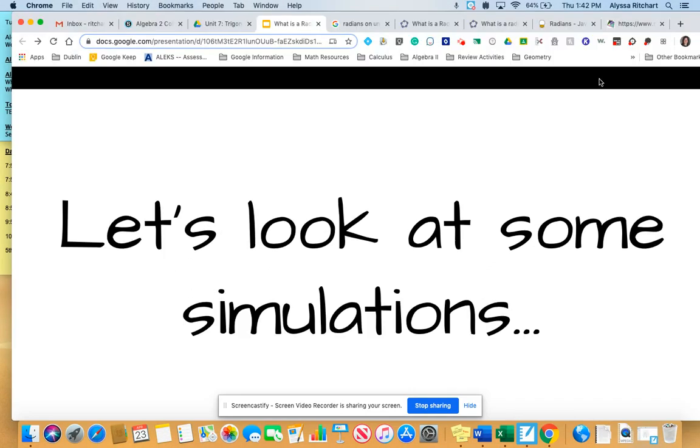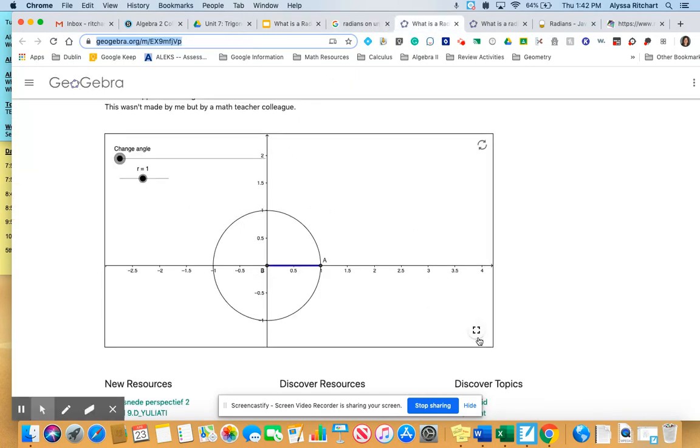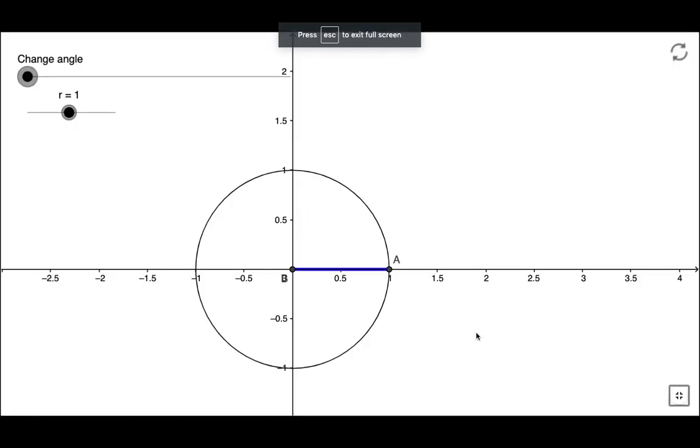First, we're going to take a look at some simulations. We have a circle with radius 1. What we're going to do is take this radius and wrap it around the entire circumference of the circle. So we're going to take that blue radius and wrap it around. That is considered 1 radian.